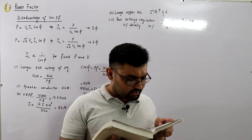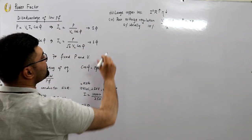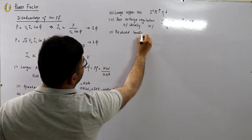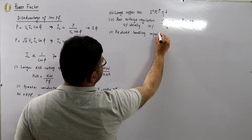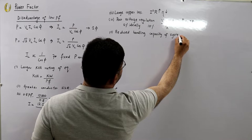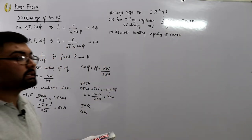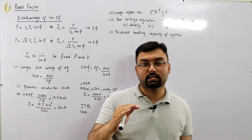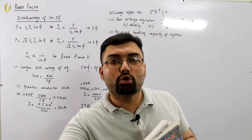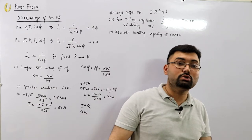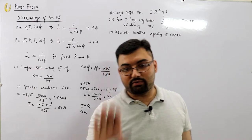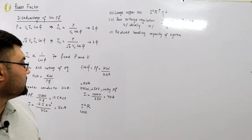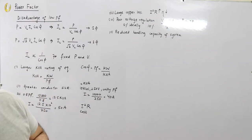The fifth disadvantage is reduced handling capacity of the system. At a lower power factor, equipment is not fully utilized because the load demand does not approximate the KVA rating of the equipment. At a higher power factor, you utilize the equipment's full rating.